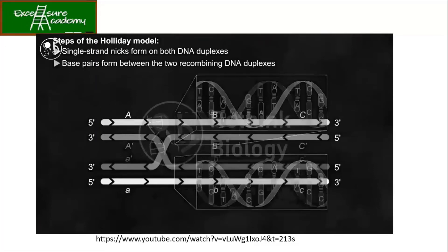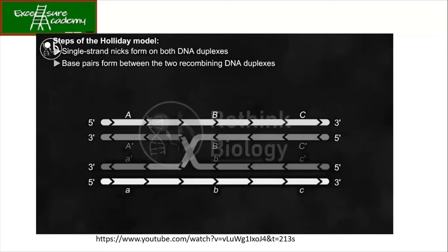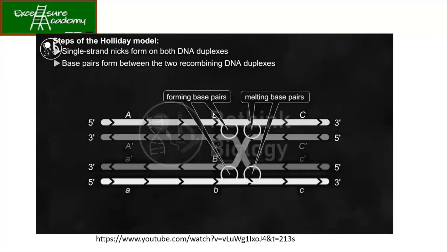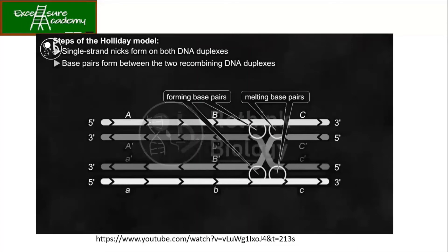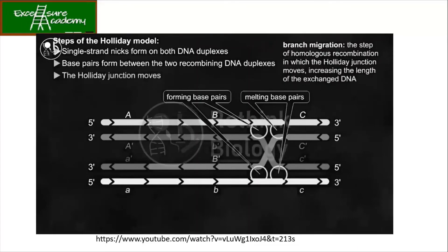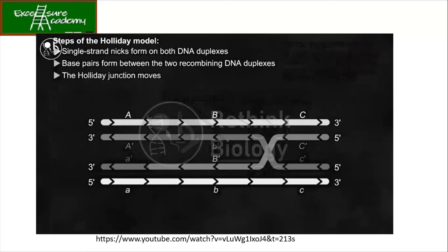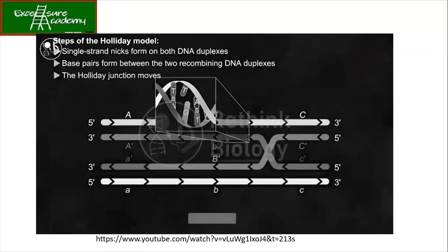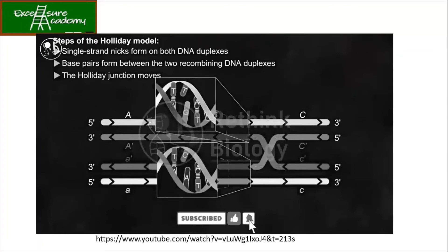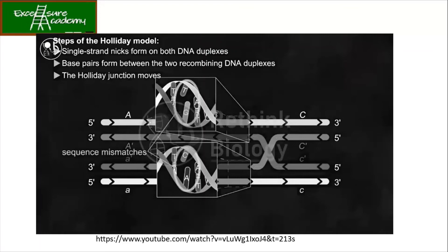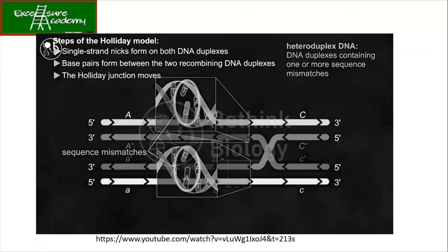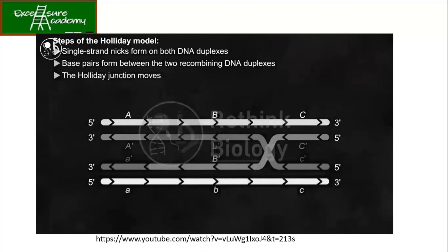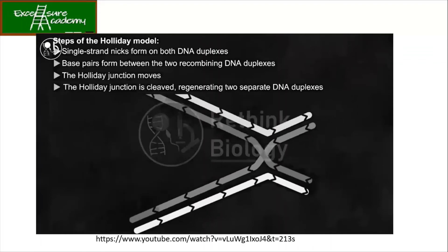Branch migration then occurs, in which the Holliday junction moves by repeatedly melting and forming base pairs. In the parental DNA molecules, base pairs are broken, and in the recombination intermediate, identical base pairs are formed. Because the DNA duplexes have small sequence differences due to different alleles, after branch migration the new DNA duplex will have a few sequence mismatches — these regions are named heteroduplex DNA. At the last step, the Holliday junction is cleaved, regenerating two separate DNA duplexes — this process is called resolution.